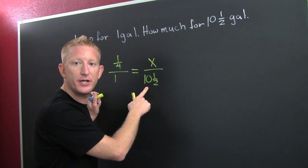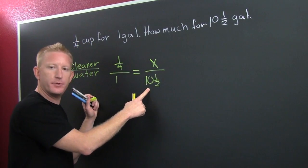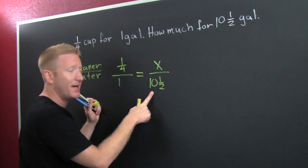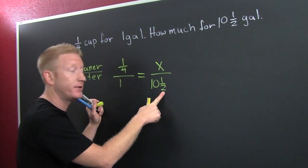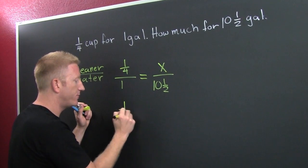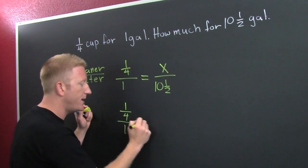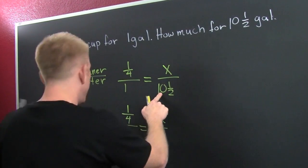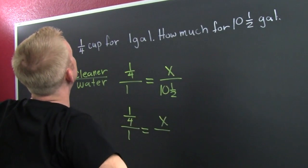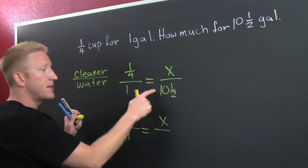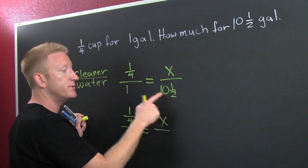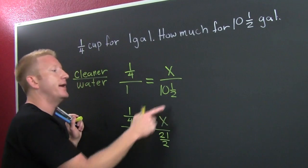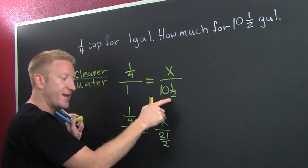But I do know that I have ten and one-half gallons of water. I see mixed numbers. When you see mixed numbers, you want to go improper. It's just so much nicer to work with one fraction instead of a whole part and a part of parts. So I'm going to say one-fourth is to one as X is to... You use the guitar method. Two times ten is twenty plus one is twenty-one halves.